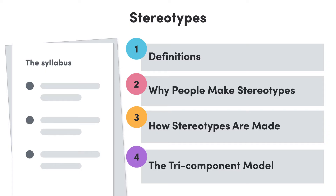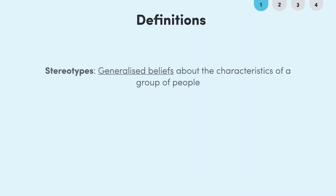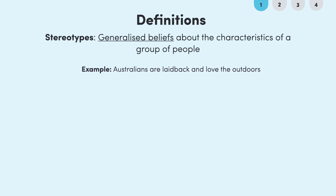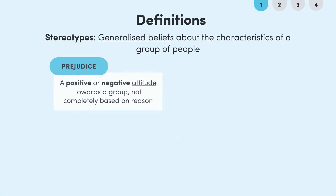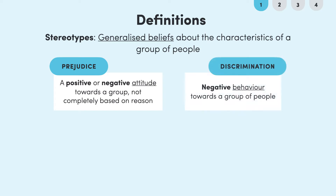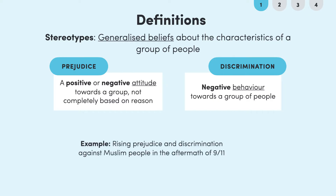We'll also look at how the tri-component model shows the different components of stereotypes. Stereotypes are generalized beliefs about the characteristics of a group of people. For example, a common stereotype is that Australians are laid back and love the outdoors. Stereotypes can also develop into prejudice, which is a positive or negative attitude towards a group that's not completely based on reason. What's more, stereotypes can also lead to negative behavior towards a group of people, which is called discrimination.